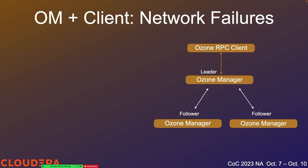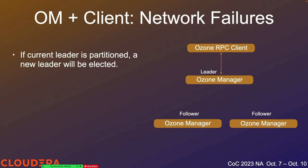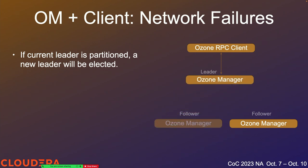Let's start by breaking things. First we'll look at a network failure where the leader in our Raft quorum is completely partitioned from the two followers. The client talks to the leader, but the leader can't communicate with any of the two followers. Since the two followers can still communicate, they can elect a leader among themselves — two of three nodes is the majority, so they can make a decision on behalf of the group. The old leader steps down after a timeout and the Raft group reconfigures so one of the followers becomes the new leader.